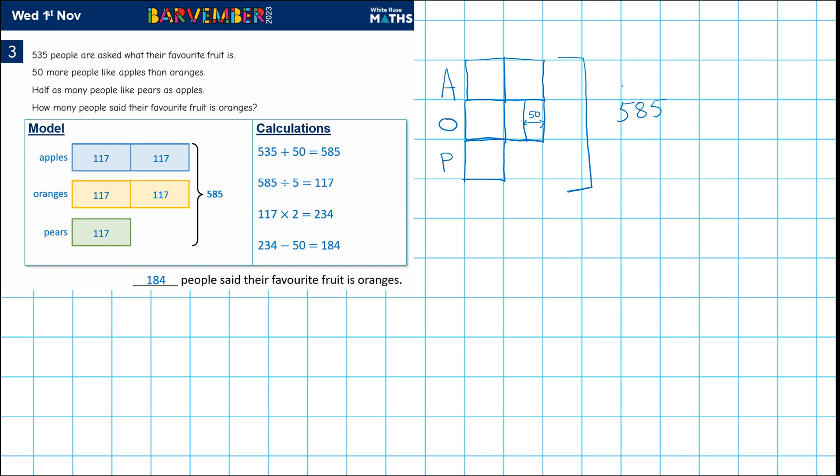So where does that leave us? Well, we now have a value for all of the equal parts without any extra bits. So if we divide 585 by 5, we're going to get a value for each of those. So if we divide 585 by 5, that's what they've done here.